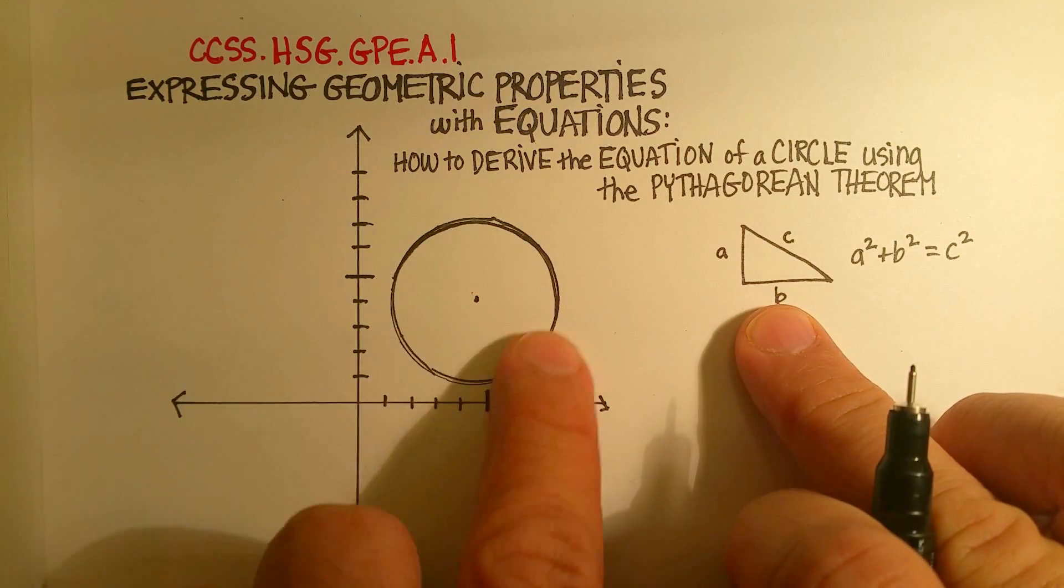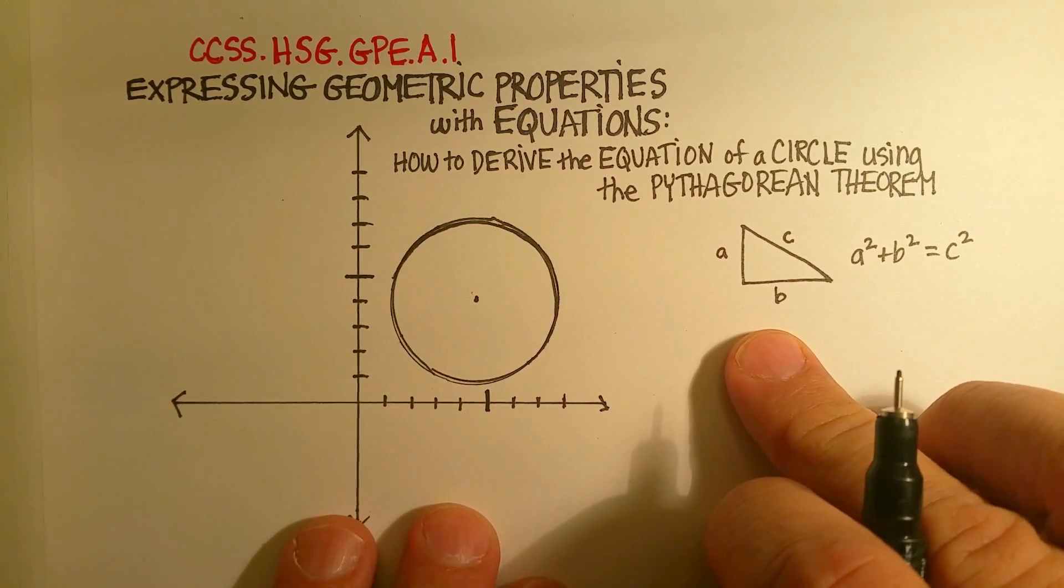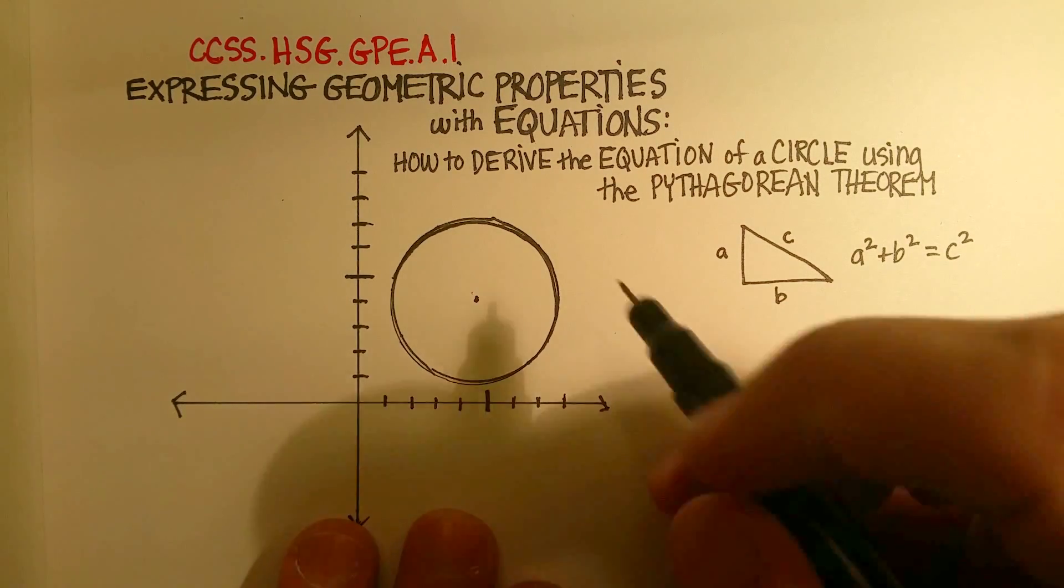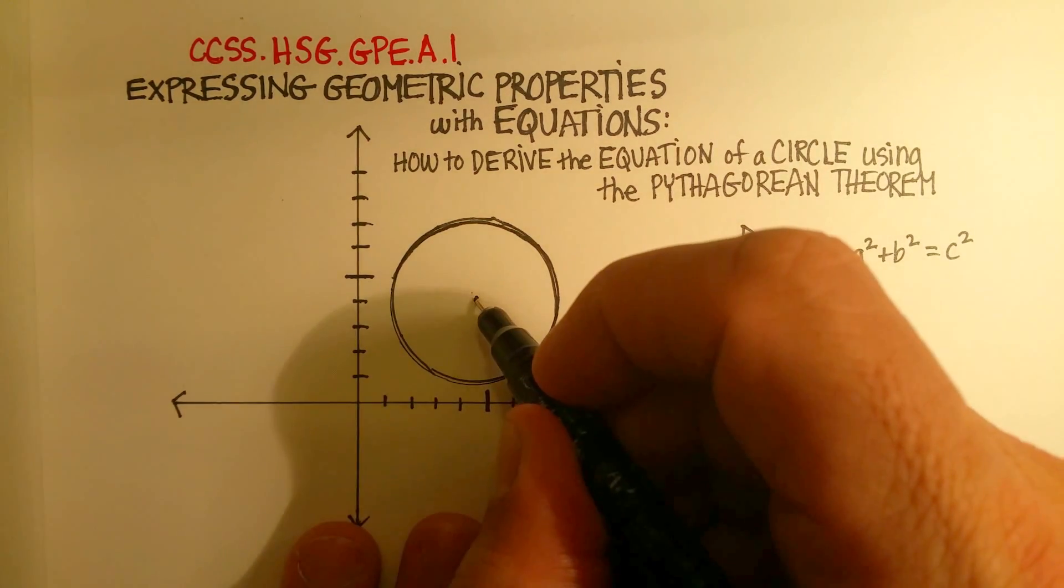Now, how does that relate to the equation for a circle? Let's go through this reasoning. What do we know about circles? We know a few things. For example,